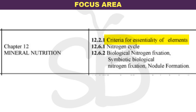The first topic is the criteria for the Essentiality of Elements. We have a few criteria covering micronutrients and macronutrients, and we will learn the names using symbols, mnemonics, and memory tricks. We will also discuss the topics of the nitrogen cycle, biological nitrogen fixation, symbiotic biological nitrogen fixation, and nodule formation. These topics are interrelated.